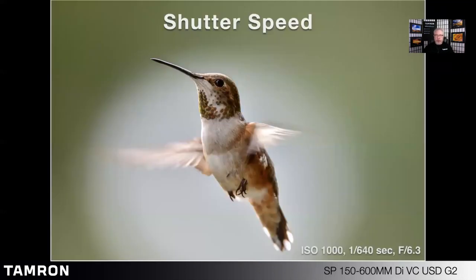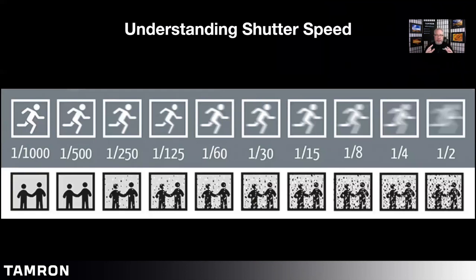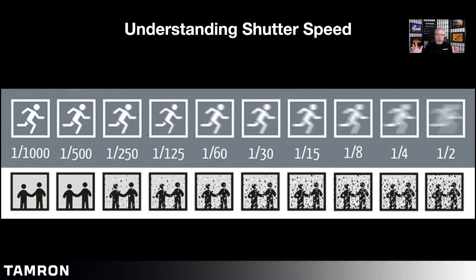Next we'll jump to shutter speed. Shutter speed is that fraction of a second where the shutter opens and closes. Very high shutter speeds — small fractions of a second like one one-thousandth of a second, or if your camera goes higher, two-thousandth, four-thousandth, maybe eight-thousandth of a second — allow you to freeze things in motion. And as the shutter speed slows down, as you can see from the graphic example, motion blur can happen. Camera shake can also induce motion blur at slower shutter speeds.